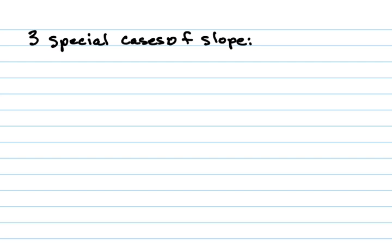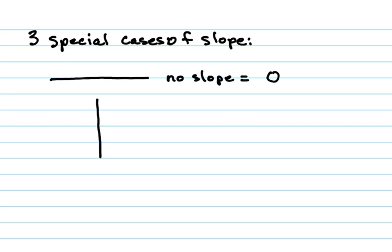You can have a horizontal line. And if that's the case, a horizontal line is not going up or down any, so it has no slope. What number represents nothing? Zero. So you can have a slope of zero.